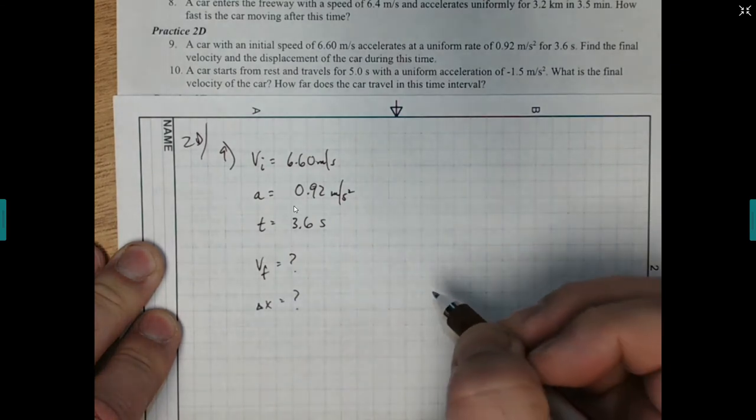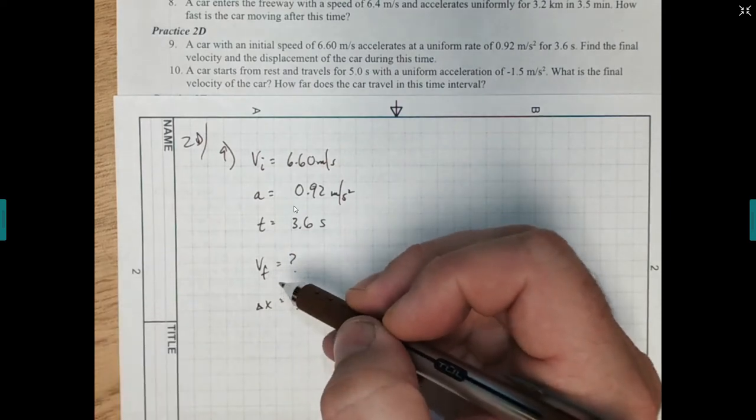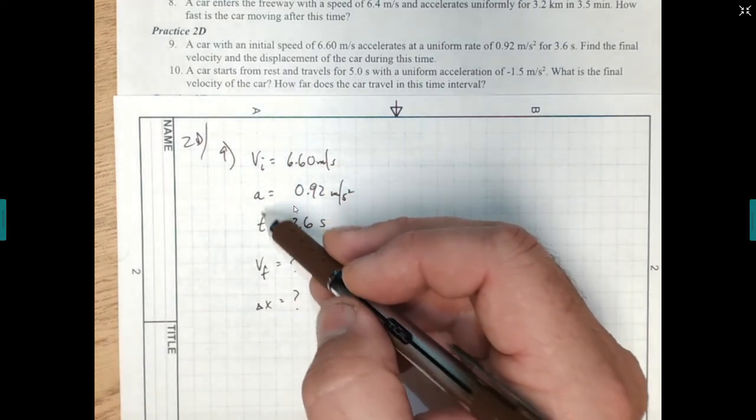So we're looking for two separate things on this one from the car during this time. Let's just start with final velocity since that's what they asked us for. We have initial, acceleration, and time.